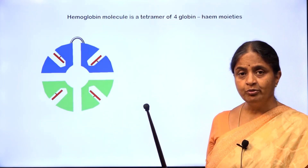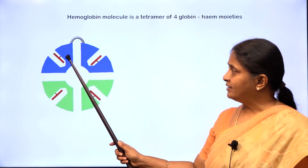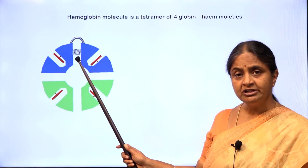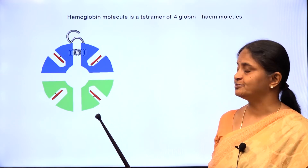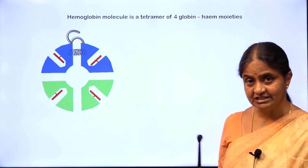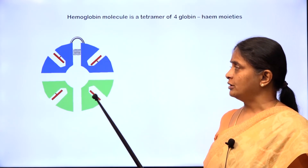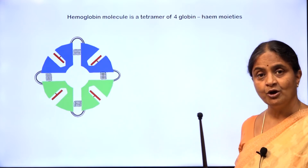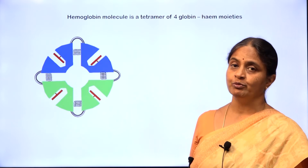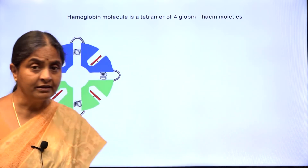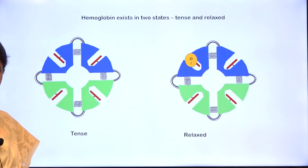Two adjacent globin moieties can be thought of as being held close together with something like a latch, and there is a loaded spring between them. When they are held opposed like this, we can think of hemoglobin as existing in the tense form, or T form. This form has a very low affinity for oxygen — in fact, it is deoxyhemoglobin. If the latch opens, the spring pushes apart the two globin moieties into what is called the relaxed form.